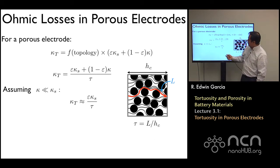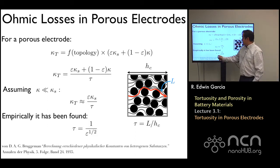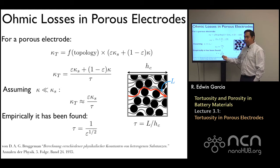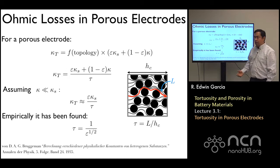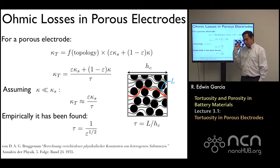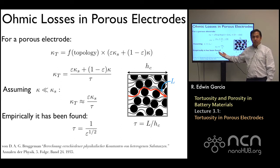The trick is to determine what the tortuosity of the system is. What people have found empirically is that the tortuosity is given as one over the porosity to the one-half. I find this exponent of one-half very interesting — why is it not 1.55, why not 1.49? It is one-half. It was experimentally determined by Bruggemann in a paper published in 1935, where he was using aluminum particles and also particles of glass, and by doing this he found a very nice relationship that is very easy to remember.